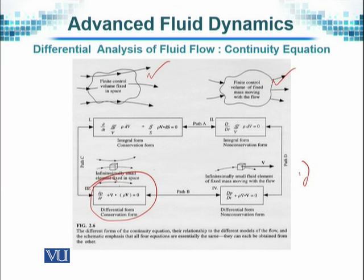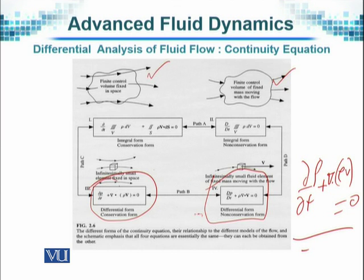The equation is this one that I wrote down earlier: d rho by dt plus divergence of rho V equal to 0. No matter whether you consider the control volume that is fixed in space or moving with the fluid flow, you will end up with the same equation.